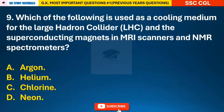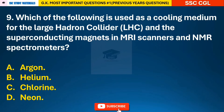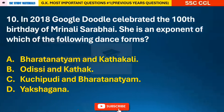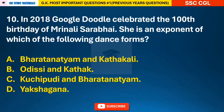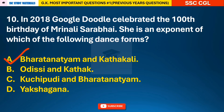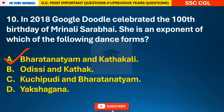Question 9: Which of the following is used as a cooling medium for the Large Hadron Collider and the superconducting magnets in MRI scanners and NMR spectrometers? Question 10: In 2018, Google Doodle celebrated the 100th birthday of Mrinalini Sarabhai. She is an exponent of which dance form? — answer A: she is an exponent of Bharatanatyam and Kathakali dance forms.